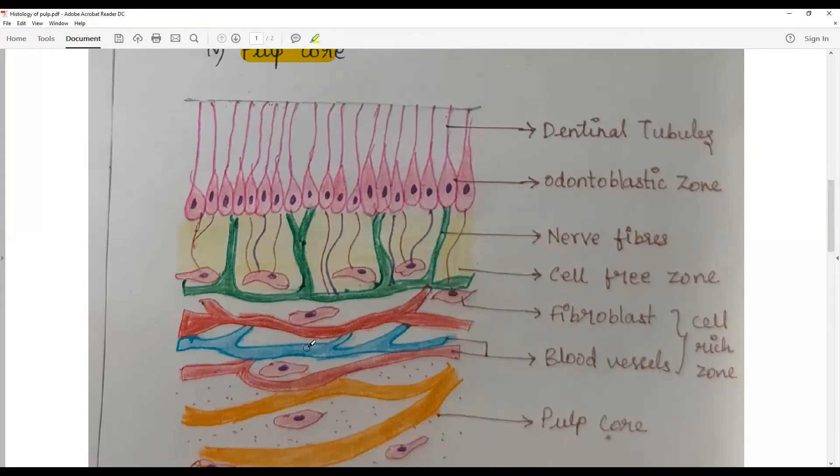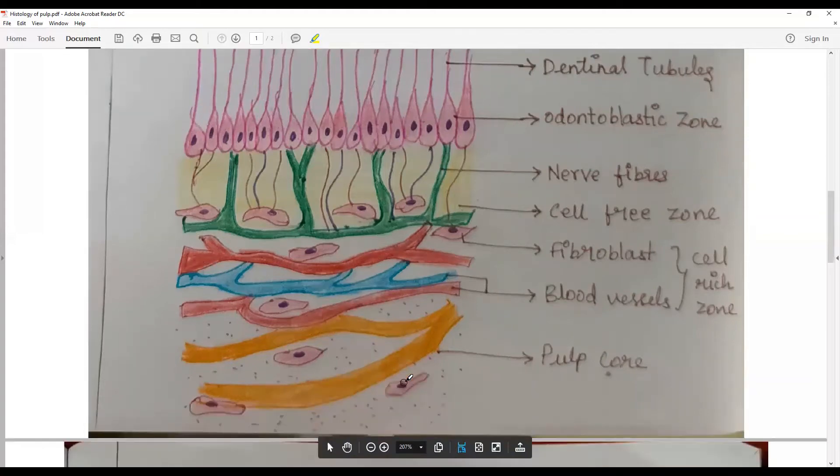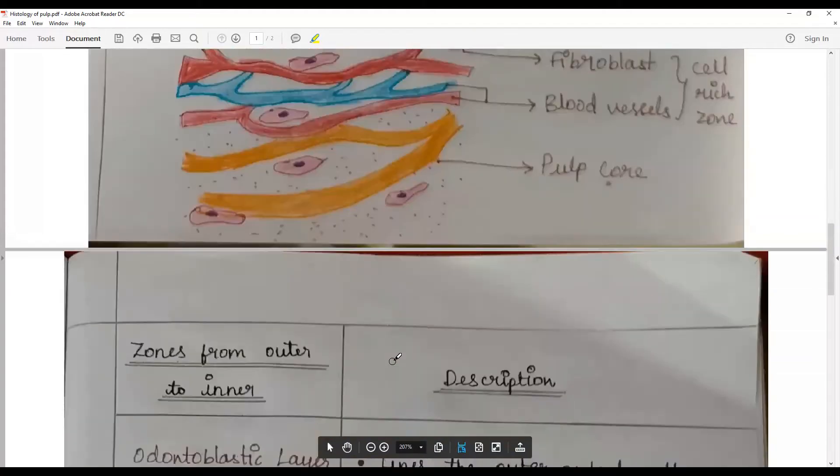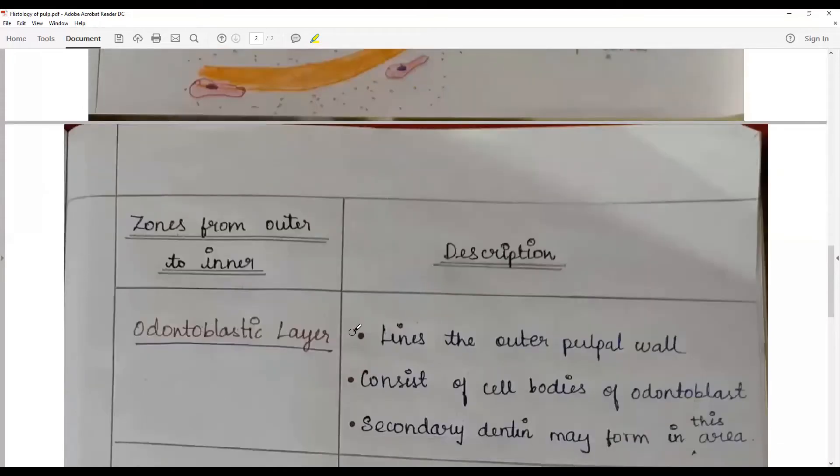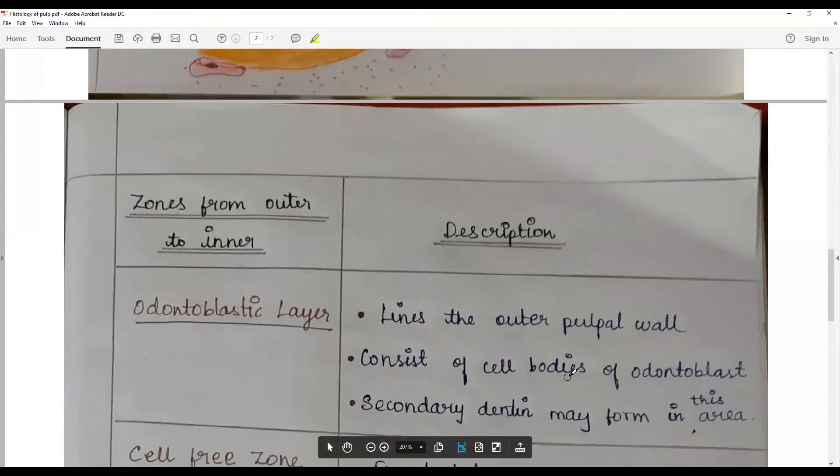Then forms the pulp core. So after that you describe from outer to inner the descriptions. The odontoblastic layer lines the outer pulp wall, consists of cell bodies of odontoblast and they have odontoblastic process running towards the dentinal tubules.